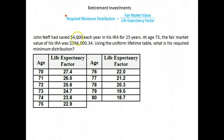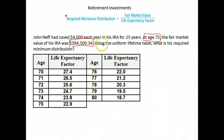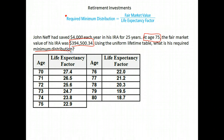Here's John Neff. He saved $4,000 each year in his IRA for 25 years. Here are the important numbers. At 75, the fair market value for his IRA — that's his retirement account — was $394,500.34. Using the lifetime table below, what's his required minimum distribution?